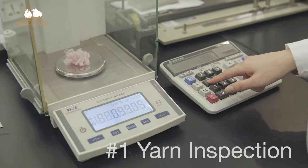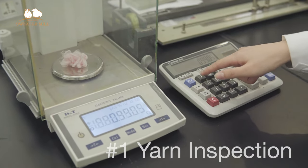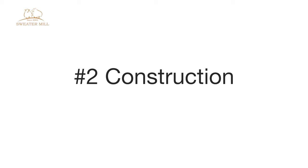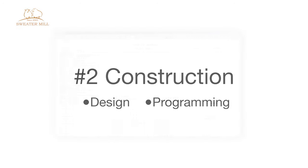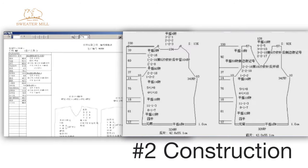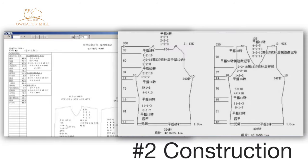Number two: construction. This process can be understood as design and programming. The construction team will upload the program based on the yarn material properties and the desired properties of the final clothes product.